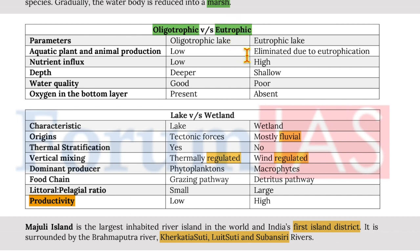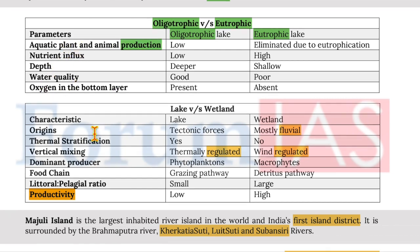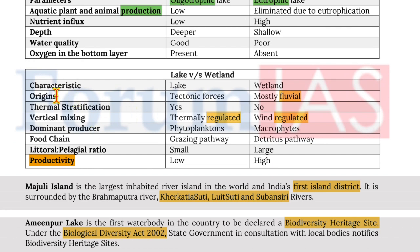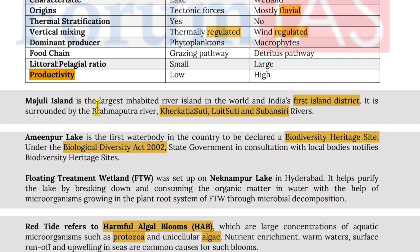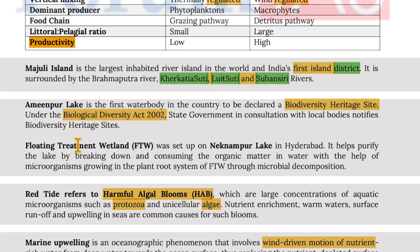Oligotrophic versus eutrophic lakes can be compared on parameters of aquatic plant and animal production, nutrient influx, depth, water quality, and oxygen in the bottom layer. Lakes versus wetlands can be compared on the characteristics of origin, thermal stratification, vertical mixing, dominant producer, food chain, littoral-pelagic ratio and productivity. Majoli Island is the largest inhabited river island in the world and India's first island district, surrounded by the Brahmaputra river, Kher Katiya Soti, Luit Soti and Subhansiri river.